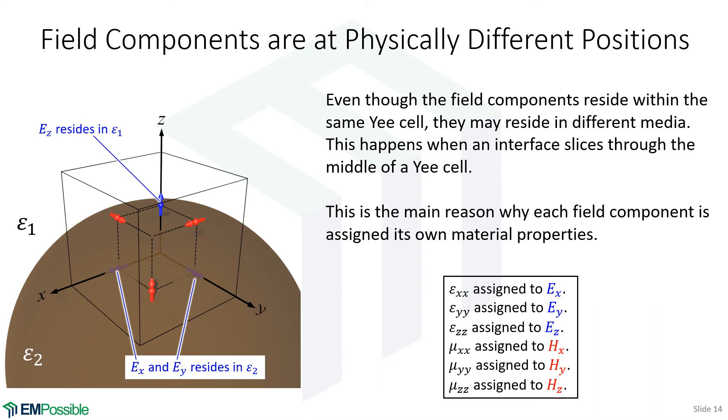To handle this, we actually assign each field component its own array for either permittivity or permeability. For the most part, these arrays will look the same. It's just at the boundaries of curved objects where some field components might be inside, some might be outside, that those differ. And so that's a way that that is handled. We also use that a bit when we incorporate things like our PML.